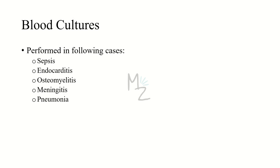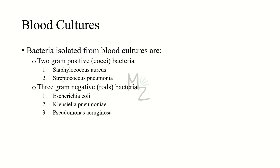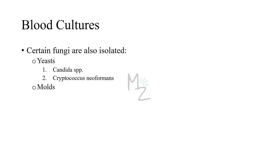Blood cultures are performed in cases of subacute bacterial endocarditis, osteomyelitis, meningitis, and pneumonia. The bacteria most frequently isolated are two gram-positive cocci — Staphylococcus aureus and Streptococcus pneumoniae — and three gram-negative rods — Escherichia coli, Klebsiella pneumoniae, and Pseudomonas aeruginosa. Certain pathogenic fungi including Candida species and Cryptococcus neoformans can also be isolated, though this video focuses on bacterial diagnosis.